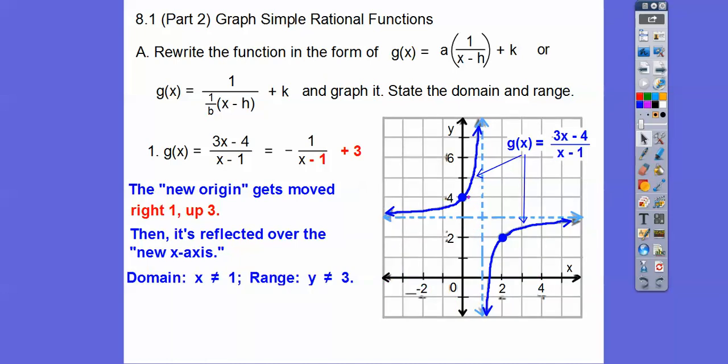So your domain is everything except the vertical line x equals 1. The shorthand is: x doesn't equal 1. And the range is everything except this horizontal line, because the graph goes up forever on one side and down forever on the other — it just doesn't cross y equals 3. So the range is y doesn't equal 3.